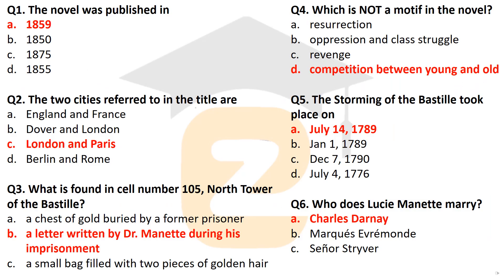The first question: the novel A Tale of Two Cities was published in 1859. The two cities referred to in the title are London and Paris. The setting of this novel is in two different countries — London and Paris.